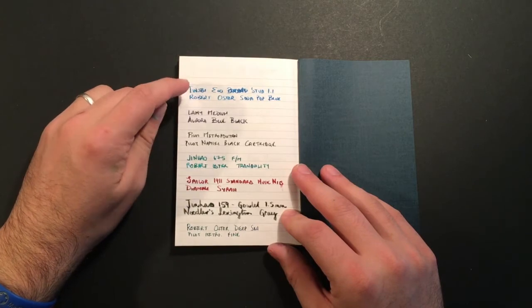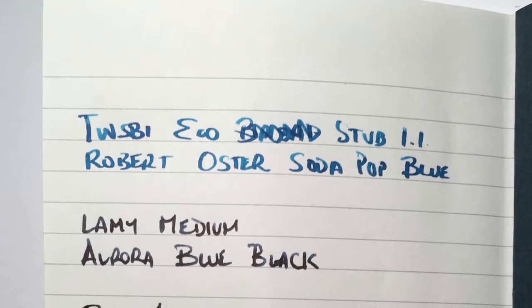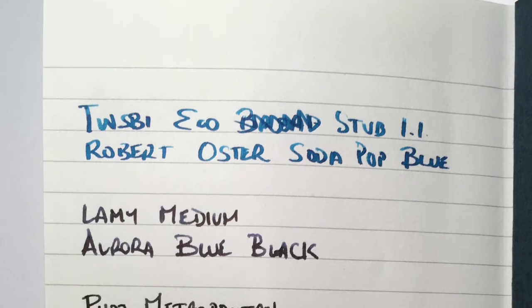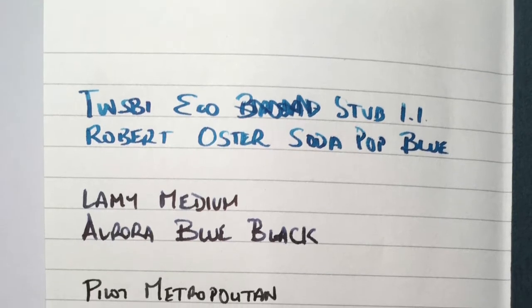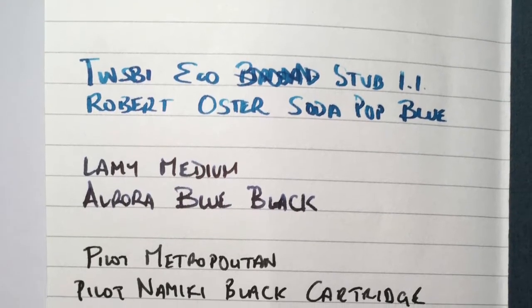So I used the TWSBI Eco with a 1.1 stub nib with Robert Oster Soda Pop Blue, Lamy medium nib with Aurora Blue Black, and Pilot Metropolitan medium with a Pilot Namiki Black cartridge.